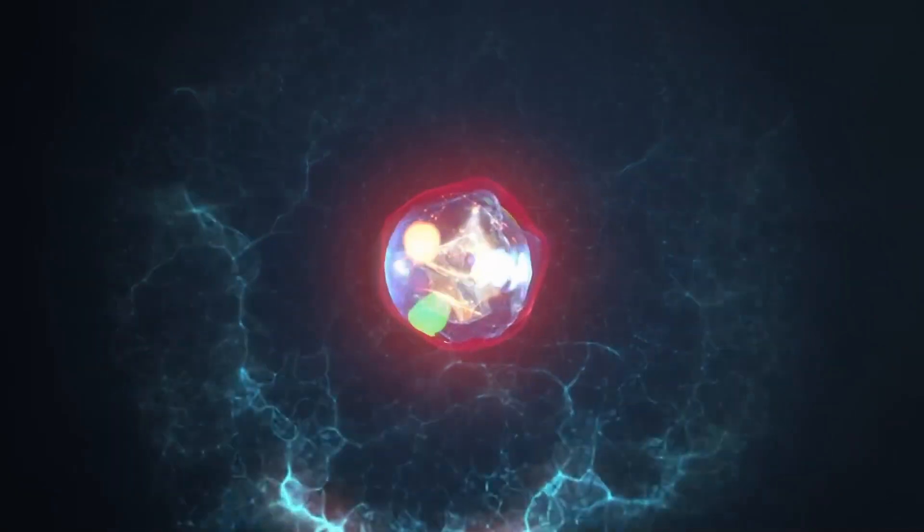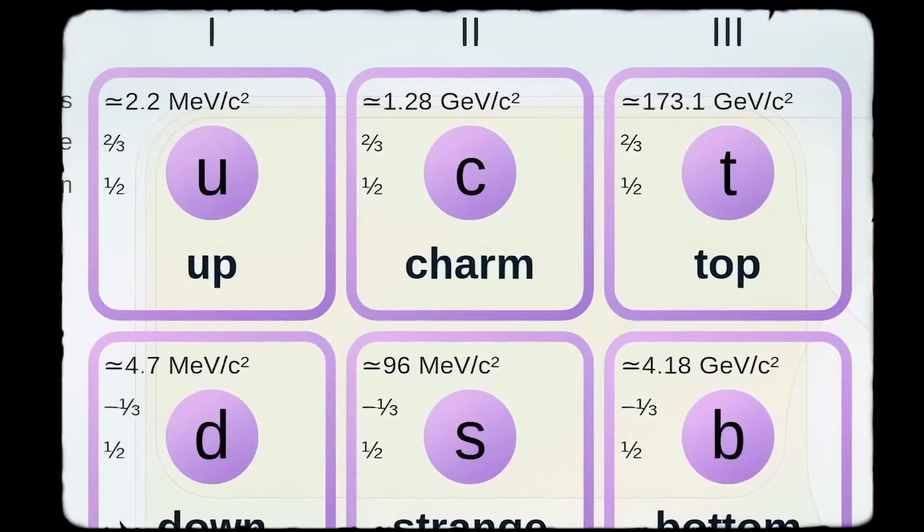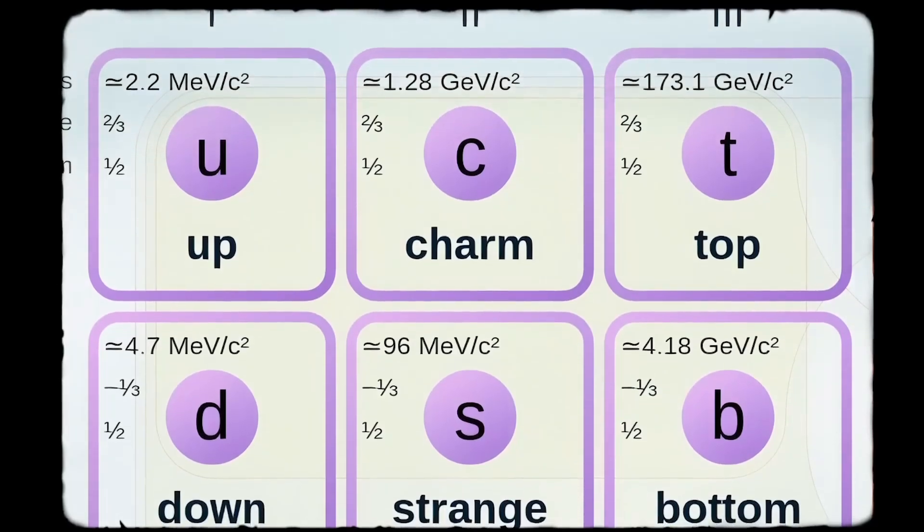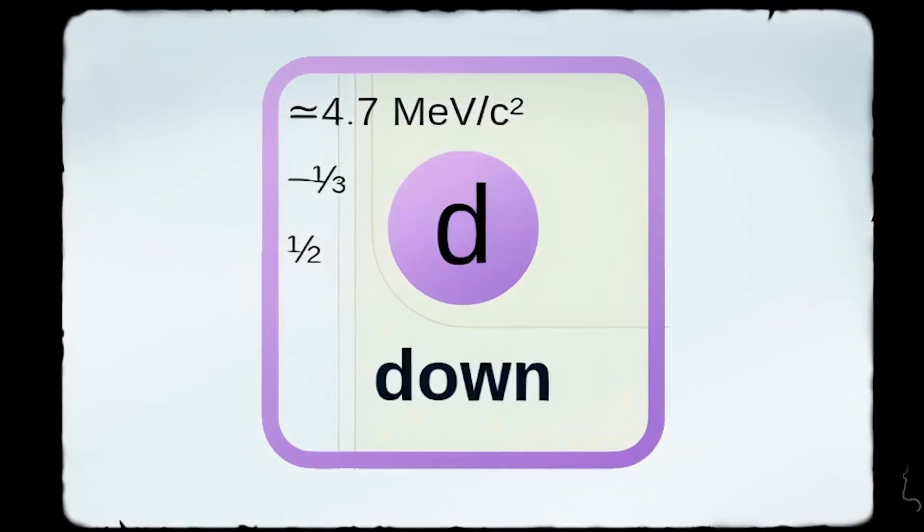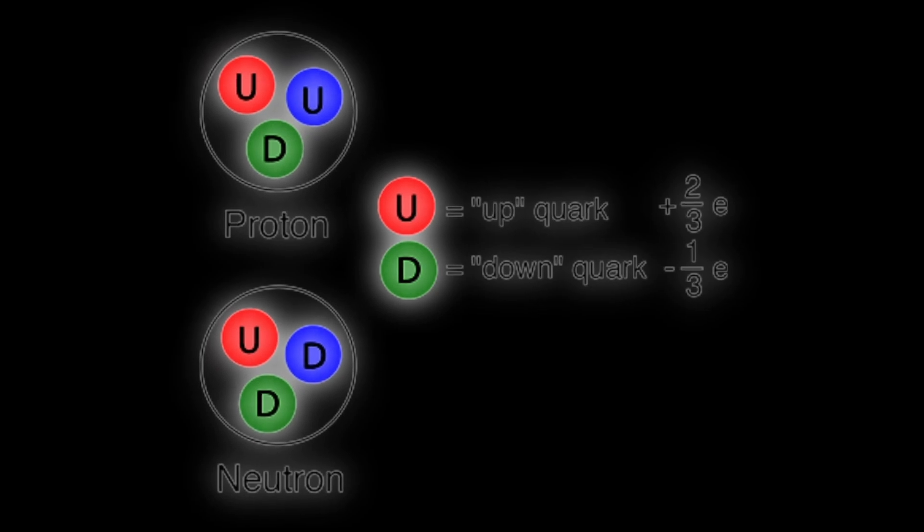Strangelet, particle of destruction. Let's start with a more familiar concept: quarks. Among the six types of quarks, the most common are up and down quarks, which are the fundamental components of atomic nuclei.